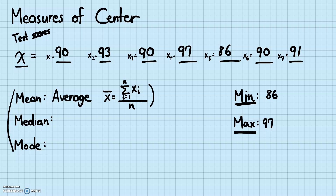This looks a bit complicated, but it's really doing a very simple thing — finding the average. You add up all the data in the numerator and divide by the number of data. We're using n, i, and x here to generalize. If you add all of those up, that's 637, and dividing by 7 gives a mean of 91.